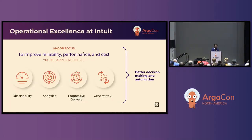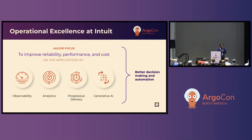At Intuit we have a major initiative to continuously improve operational excellence — particularly the reliability, performance, and cost of all of our systems. Our strategy is to leverage technologies like observability, analytics, progress of delivery, and most recently generative AI in order to accomplish this. The goal is to enable systems and our operations people to make better decisions and to automate more.